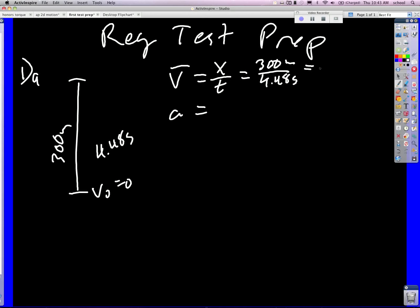I would use x equals v0 t plus one half a t squared. Did they say from rest? Yes. So then a equals 2x over t squared. That should look very familiar from the lab.